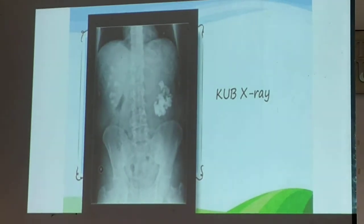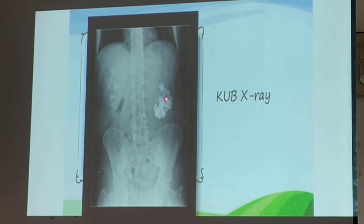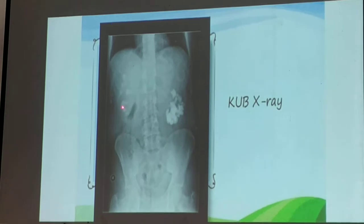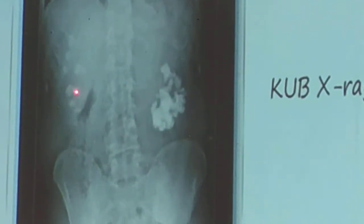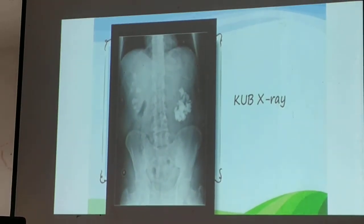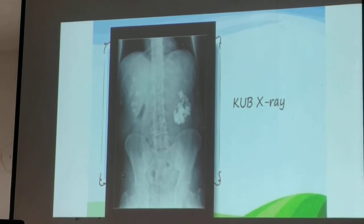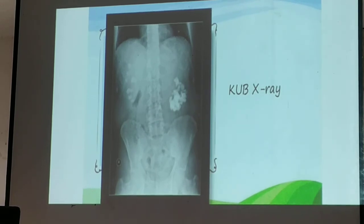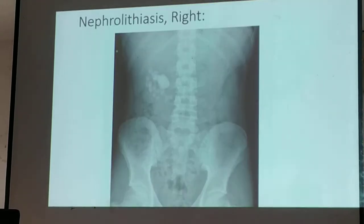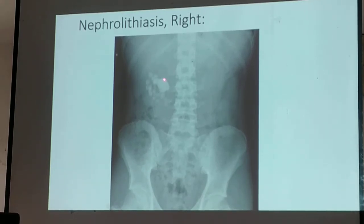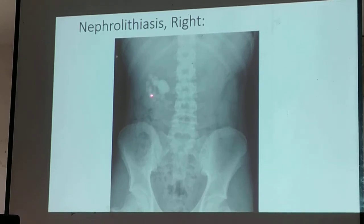This is another KUB film. A staghorn calculus on the left is more prominent than the multiple calculi on the right. There's no contrast material — this is just a plain film. Because stone will be seen as white. This is a big staghorn calculus, and there are other smaller stones surrounding your staghorn calculus.